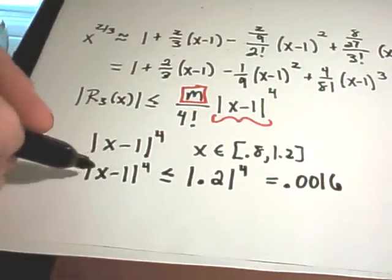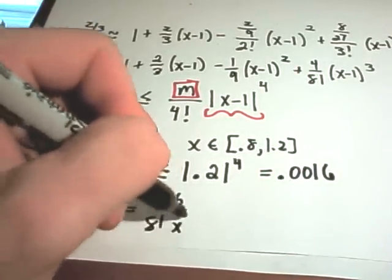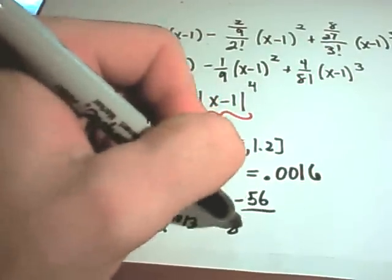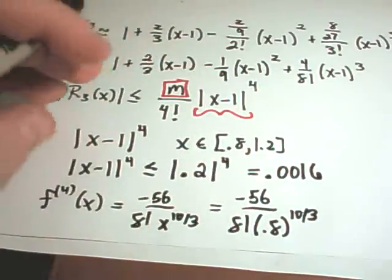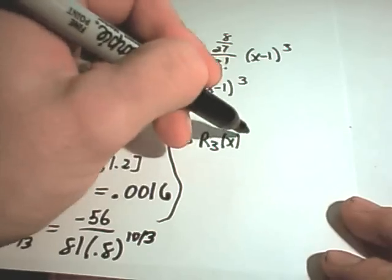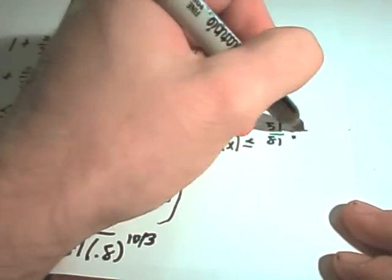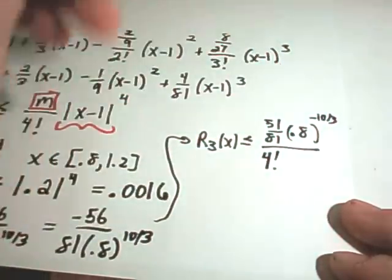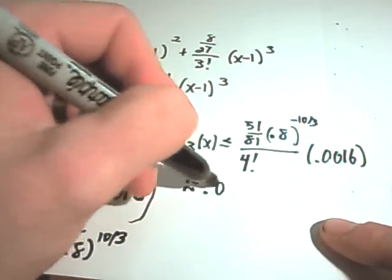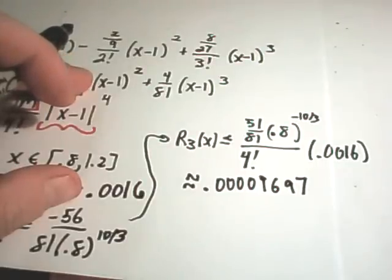The fourth derivative at x is negative 56 over 81 times x to the negative ten-thirds. To make this as large as possible we want to make the denominator as small as possible, so we put the value 0.8 raised to the negative ten-thirds. Computing all this, the error on the third-degree Taylor polynomial is at most 56 over 81 times 0.8 to the negative ten-thirds power, all over four factorial, times 0.0016 — and we end up getting the number 0.00009697. Sorry for the fast part at the end. I hope this helps — let me know if you have any other questions.